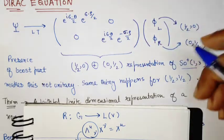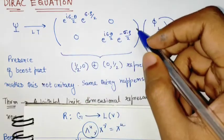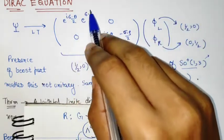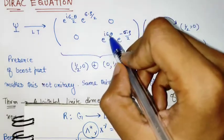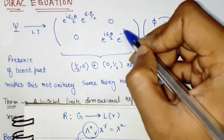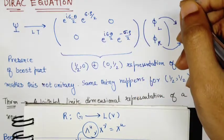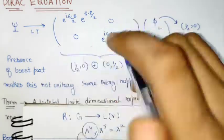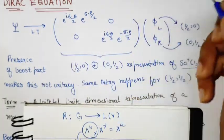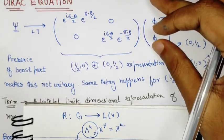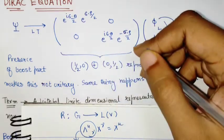This representation is not unitary, precisely because the boost parameters have no factor of iota that can take care of the complex conjugation. Basically, if you take this entire matrix as M, then M times M-dagger will not be the identity. So the presence of the boost part makes this representation non-unitary.